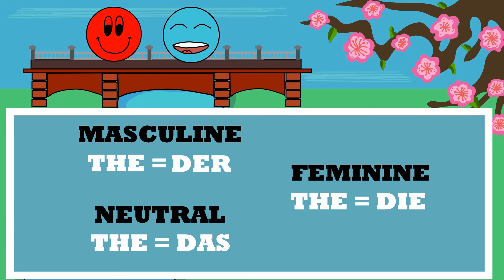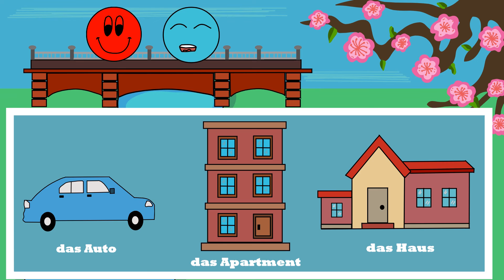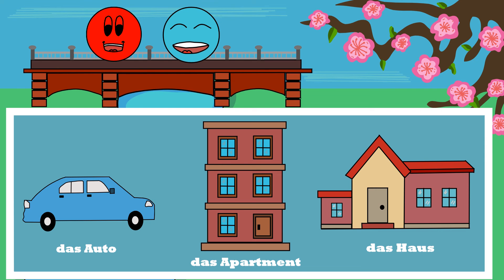How about the neutral that you mentioned before? Let me give you some examples. Das Auto, das Apartment, das Haus. Those nouns use 'das.' Das Auto, das Apartment, das Haus.